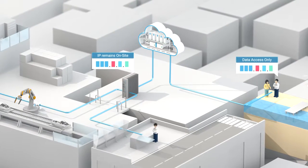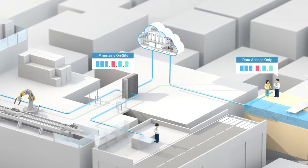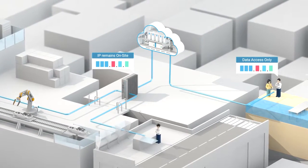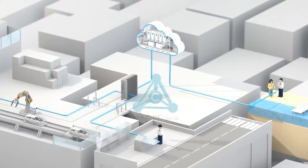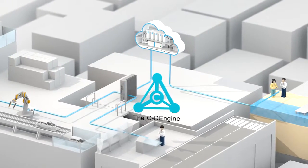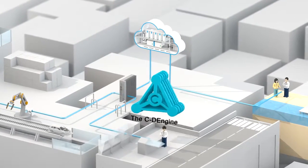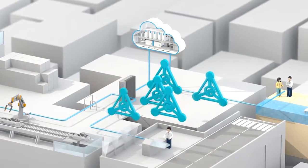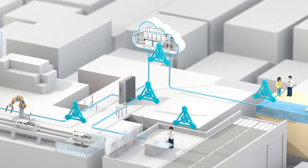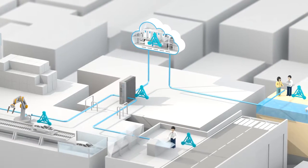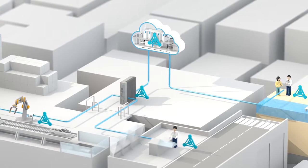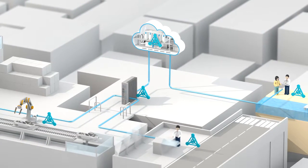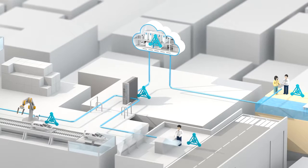The IP remains on-site. Running the seed engine in the factory devices, the factory relay, the cloud, and the mobile devices guarantees the highest level of security and reliability.